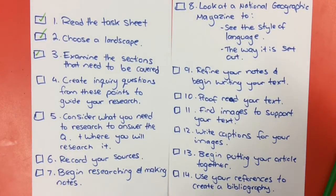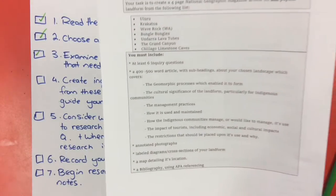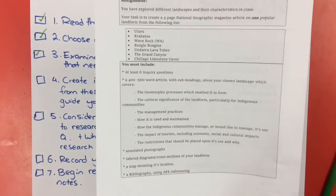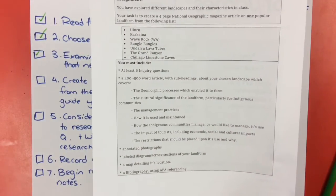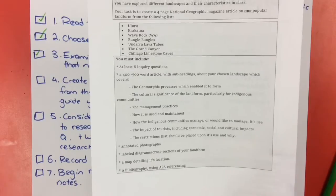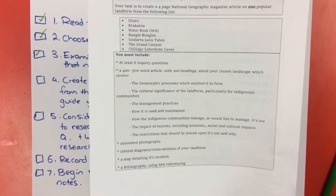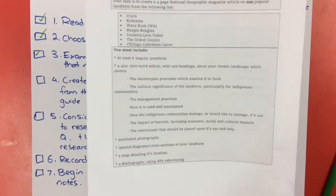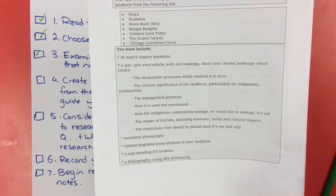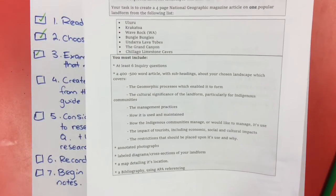Read the task sheet. You can find that on your iTunes U course under assessment. Here it is just here. We've looked at different landforms and landscapes, but you need to create a four-page National Geographic magazine article on one of the following on this list here. You can choose a different one, but run it by me before you get started.